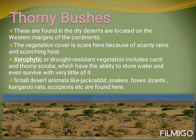Tropical deserts are found in the dry deserts which are located on the western margins of the continent. The vegetation cover is scarce here because of scanty rains and scorching heat. Xerophytic or drought-resistant vegetation includes cacti and thorny scrubs, which have the ability to store water and even survive with very little of it. Small desert animals like jackrabbits, snakes, foxes, lizards, kangaroos, rats, scorpions etc. are found here.